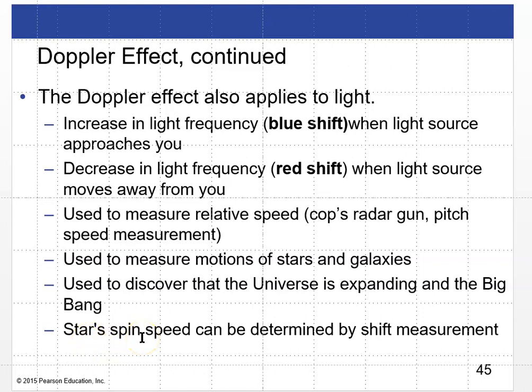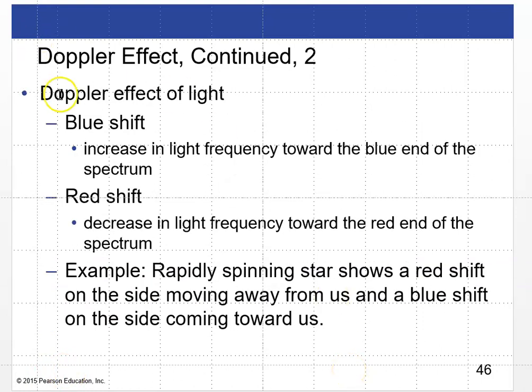Stars' spin speed can also be determined by Doppler shift measurements. The side of a spinning star moving toward you shows a blue shift to shorter wavelengths and higher frequency; the side moving away shows a red shift to longer wavelengths and lower frequency. Both occur simultaneously since the star is spinning. By measuring the amount of shift, we can determine how fast the star is spinning.